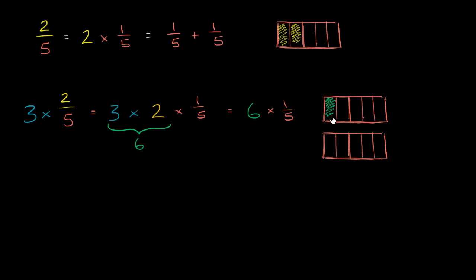So that's the 1st fifth, 2nd fifth, 3rd fifth, 4th fifth, 5th fifth, and that gets us to a whole, and then we have 6/5, just like that. So literally, 3 times 2/5 can be viewed as 6/5.